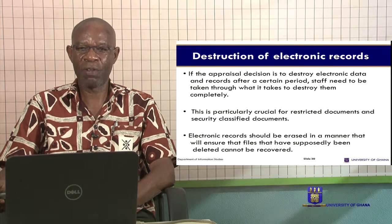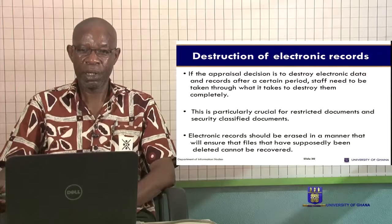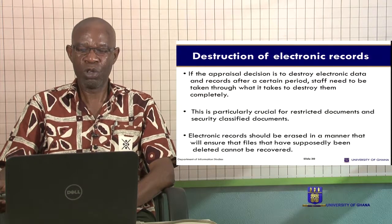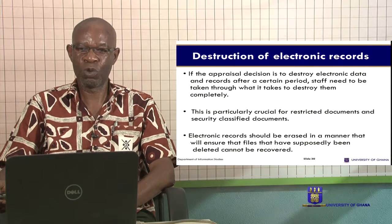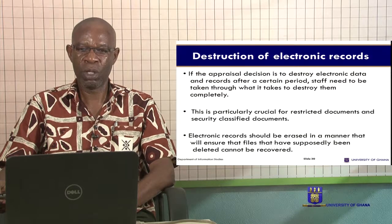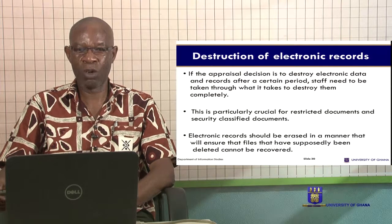If the appraisal decision is to destroy electronic data and records after a certain period, staff need to be taken through what it takes to destroy them completely. There have been arguments as to whether formatting or reformatting would get rid of records totally. The institution will have to come out with a system or process through which it will want to destroy its electronic records, and this should be such that the records cannot be retrieved after whatever measure has taken place. Because of modern developments, there could be some programs or software that can retrieve what may have been destroyed. An organization needs to come out with a policy on how to destroy records that are no more needed. Electronic records should be erased in a manner that will ensure that files that have supposedly been deleted cannot be recovered.